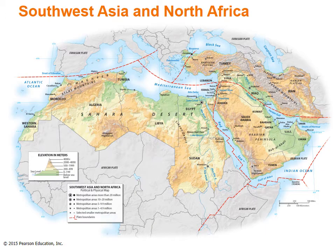Twenty-one countries make up this region from two continents, Africa and Asia. The African countries include Western Sahara, Morocco, Algeria, Tunisia, Libya, Egypt, and Sudan. From Asia are Saudi Arabia, Yemen, Oman, United Arab Emirates, Qatar, Bahrain, Kuwait, Iraq, Iran, Jordan, Israel, Lebanon, Syria, and Turkey.